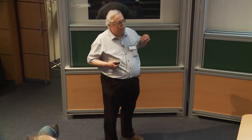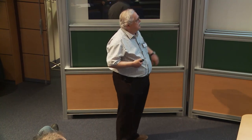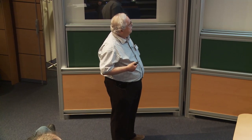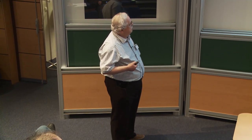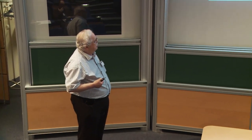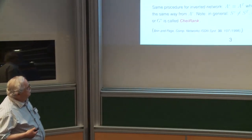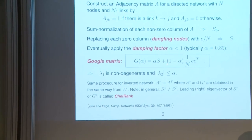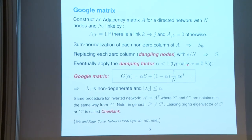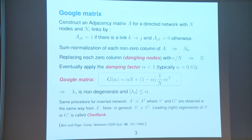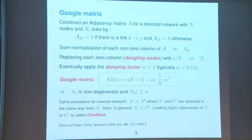In order to obtain a unique PageRank, and for other reasons, one applies a damping factor alpha, which is smaller than 1 but close to it — typically 0.85. We take the matrix S, apply this factor alpha, and add a contribution from a projector onto the unit vector. This gives the Google matrix G, which is again a Perron-Frobenius operator, now with one eigenvalue 1 and all other eigenvalues scaled down by alpha. This guarantees a spectral gap and nice convergence.